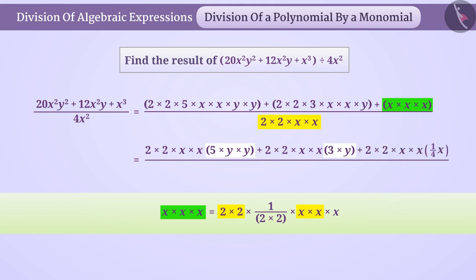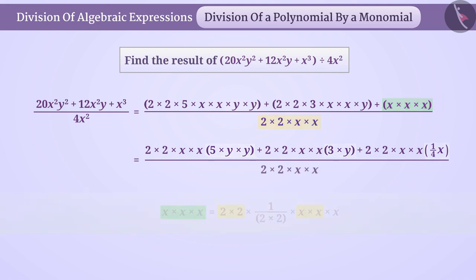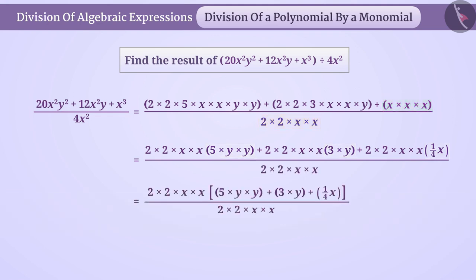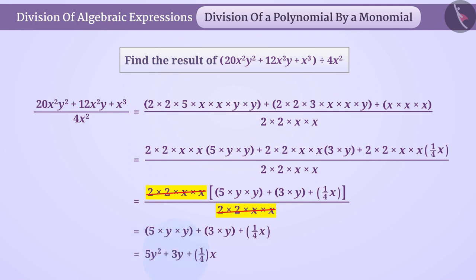After taking this common factor, 1 divided by 4x will be left in the third term. Now we can cancel the common factors 2 × 2 × x × x in the numerator and denominator. From this we get the result of the division as 5y squared plus 3y plus 1 divided by 4x.